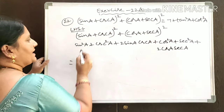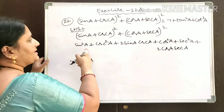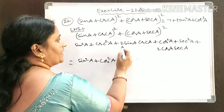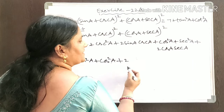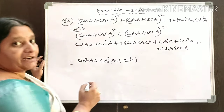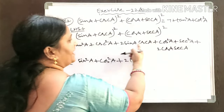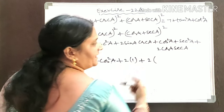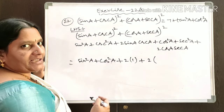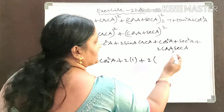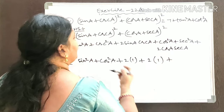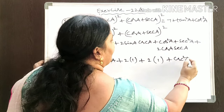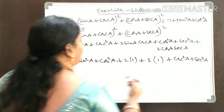Rearranging: sin²A + cos²A equals 1 by square relations. sinA and cosecA are reciprocals, so sinA·cosecA = 1, giving 2×1 = 2. Similarly cosA and secA are reciprocals, so cosA·secA = 1, giving 2×1 = 2. We still have cosec²A + sec²A remaining.